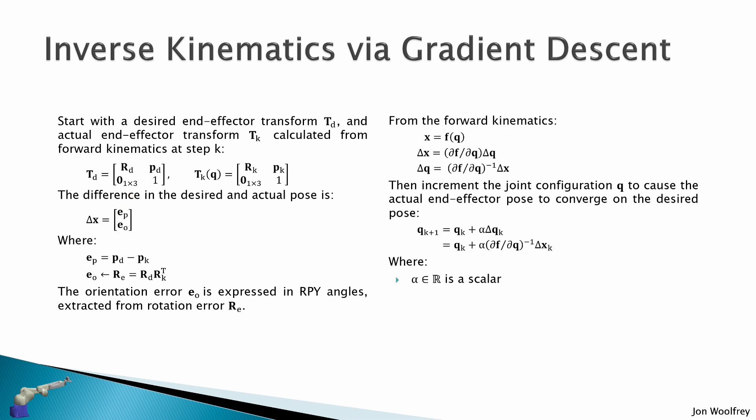Right, so here alpha is a scalar, it's one dimensional, and this matrix of partial derivatives is an n by m matrix that maps the pose error delta x from Cartesian space to joint space q. And we repeat this process until delta q is roughly zero.